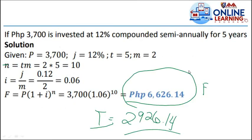Next, another problem. If P3,700 is invested at 12% compounded semi-annually - already done with quarterly, now semi-annually. That means every 6 months for 5 years. Solution: P equals 3,700. The interest rate is 12%, time is 5 years, M equals 2 because semi-annually. So n equals t multiplied by m, 2 times 5, we have 10.